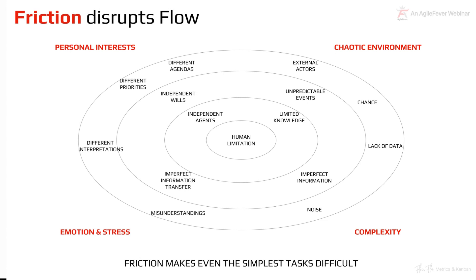Remember that friction disrupts flow. This diagram shows circles each pointing in different directions: personal interest, emotion and stress, complexity, and chaotic environment — with human limitation at the center. There are limits to what a human being can do with limited knowledge, independent agents, unpredictable events, imperfect information, external actors, different agendas, different interpretations, different priorities, and noise. In the midst of all of this, you're expected to run flow.